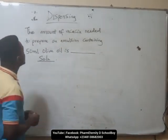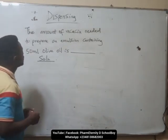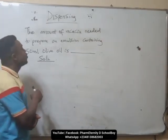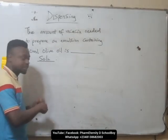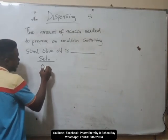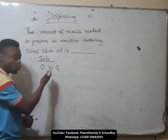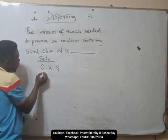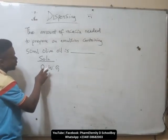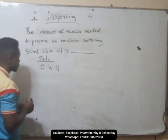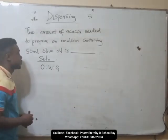To solve this question, I want to talk about one or two things. In emulsion, we have a particular proportion of oil — the ratio of oil to water and to the gum used. Acacia is the gum here. The type of oil you use will determine the proportion, and also the type of emulsion you are preparing and what you want to achieve with it.